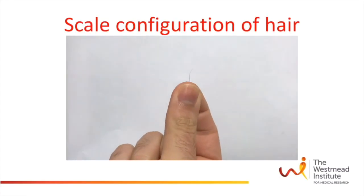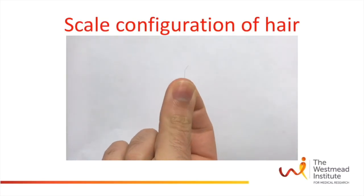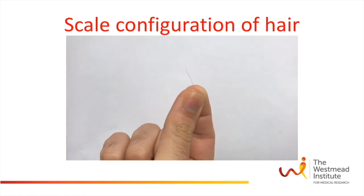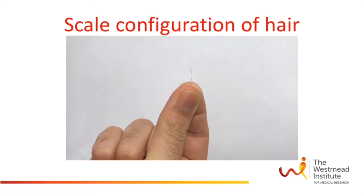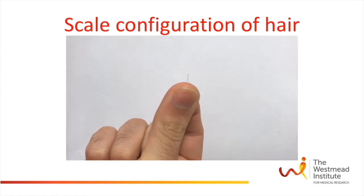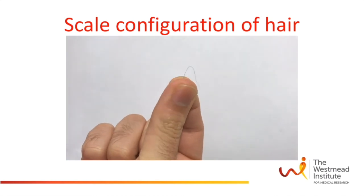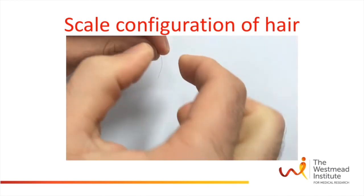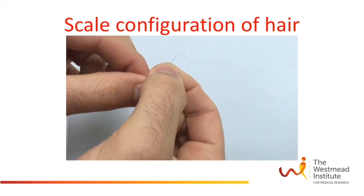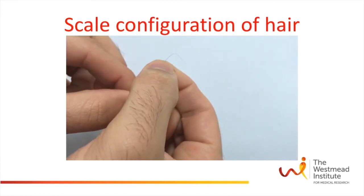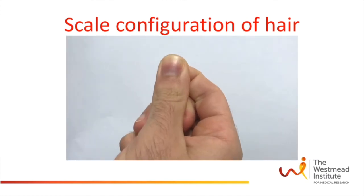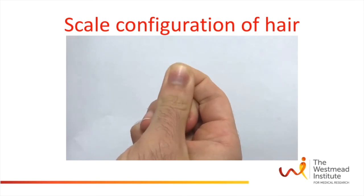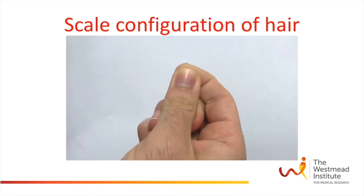The principle behind this phenomenon can be nicely demonstrated by taking a hair and rubbing it between your finger and thumb — you can see the hair moves in one direction. Turn the hair around and it moves in the opposite direction. This rubbing represents the friction in the gluteal area.